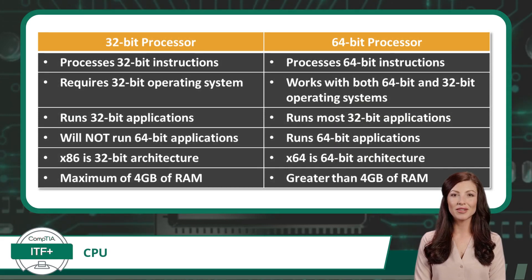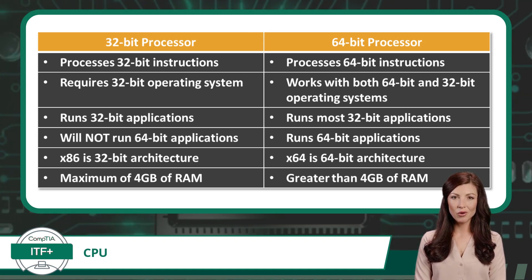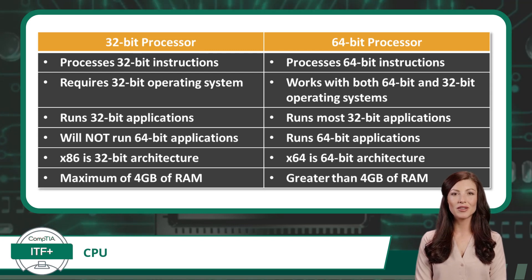Next we will discuss the difference between 32-bit and 64-bit CPUs. These are two common types of CPUs that you are likely to find installed in a laptop, workstation, or a server. The difference lies in the way they handle data. 32-bit CPUs support instructions that are 32 bits in size, while 64-bit CPUs are designed to handle 64-bit instructions.